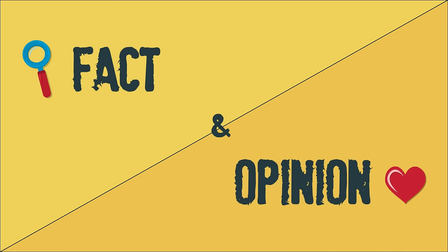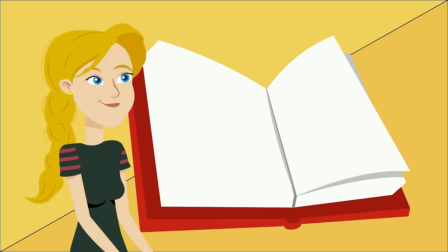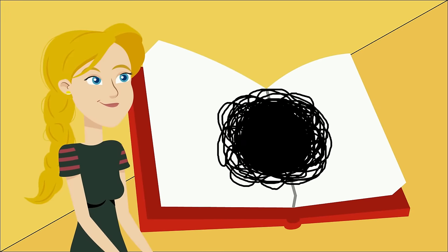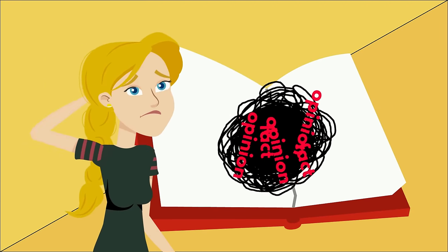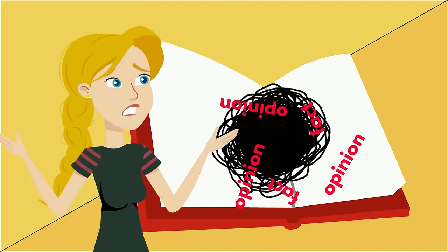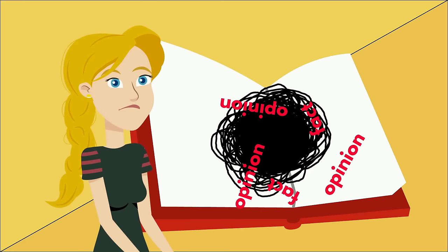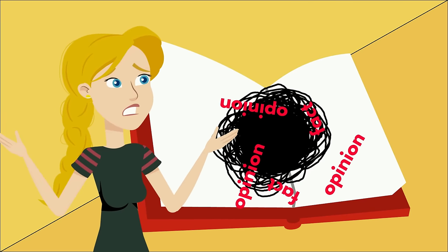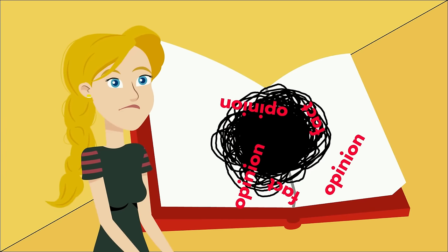Fact and opinion. Authors often combine fact and opinion in persuasive writing, advertisements, speeches, and even in some non-fiction texts. If the reader can't distinguish the facts from the opinions, they can be manipulated.